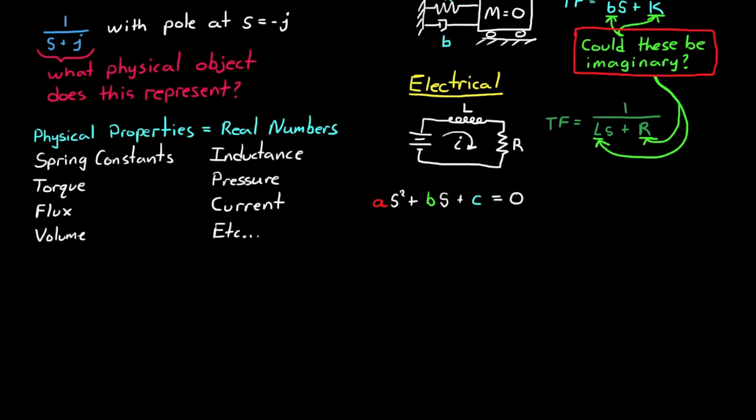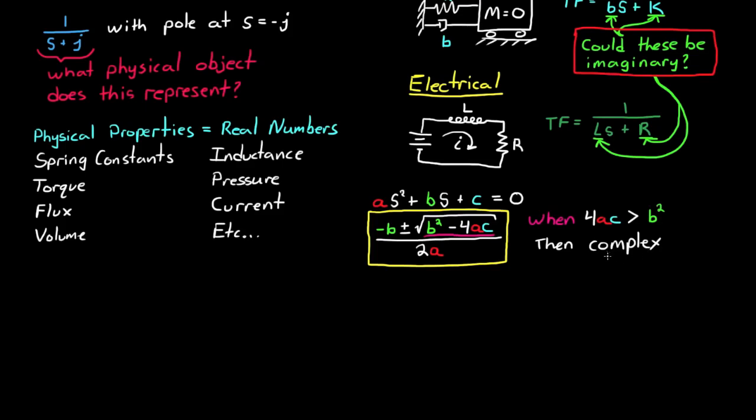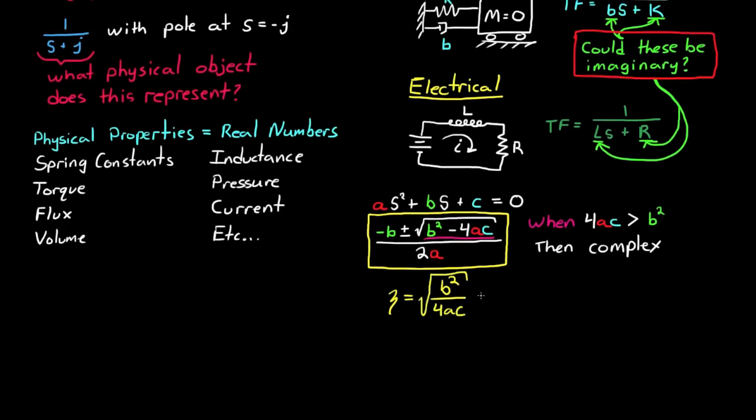This can be seen from this generic second order equation. You can solve for the roots of this equation using the quadratic equation. Which is minus b plus or minus the square root of b squared minus 4ac all over 2a. In order to have complex roots, the value inside the square root must be negative. And you can see that this is true when 4ac is greater than b squared. And if we took the ratio of these two, you could say that when the square root of b squared divided by 4ac is less than 1, then we'll have complex roots. This is called the damping ratio, and it's assigned to the Greek letter zeta. This ratio is important in control systems since it marks the boundary between complex roots,